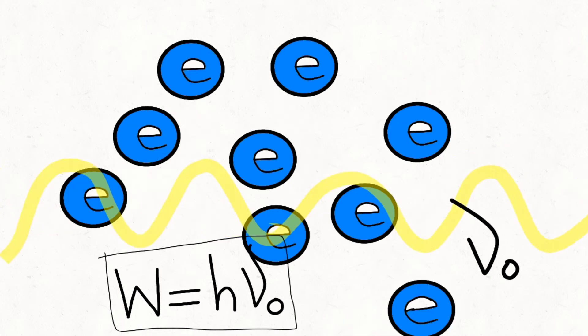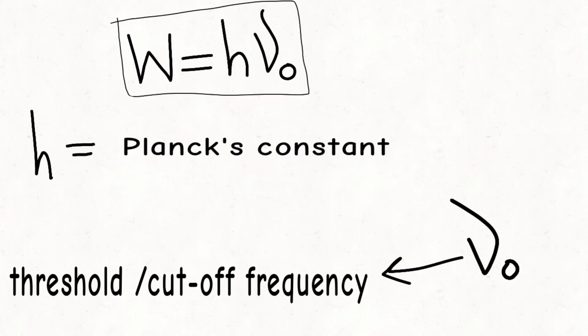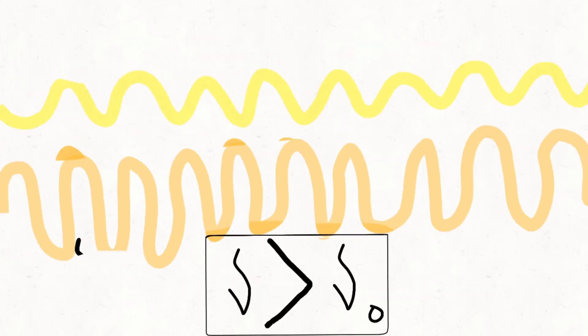The frequency of light that provides exact energy to equalize the work function of a metal is called the threshold or cutoff frequency of that metal. So when a frequency of light greater than the threshold frequency of the metal falls on the metal surface, the additional energy gets contributed to the kinetic energy of the ejected electron.